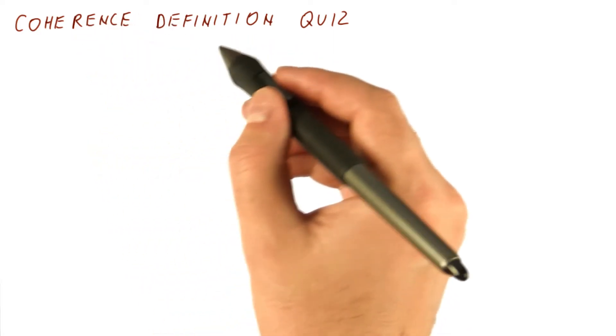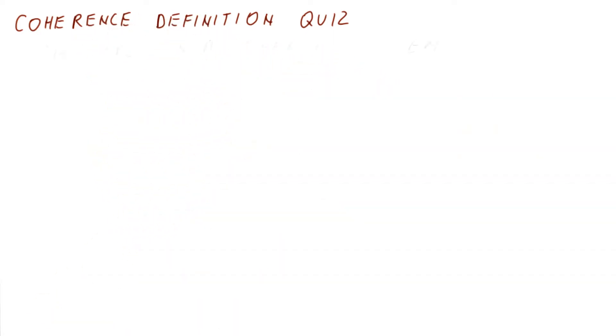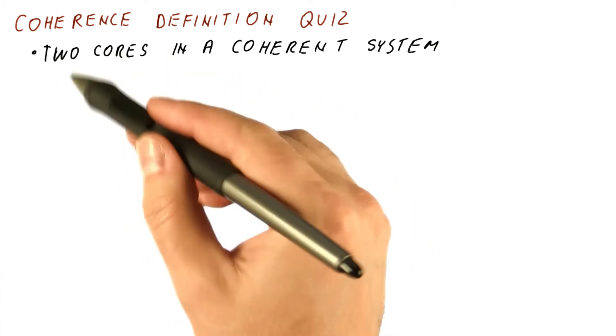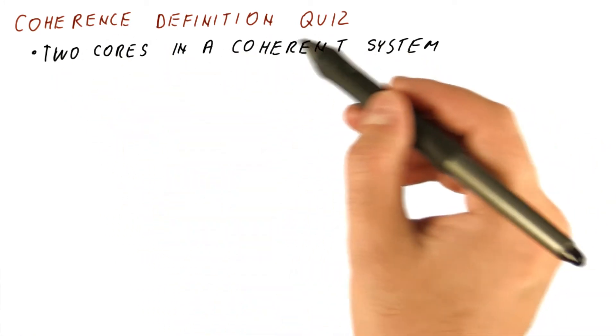So let's see if we understood the coherence definition. Let's say that we have two cores in a system that is supposed to be coherent.